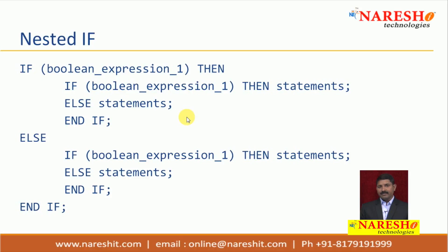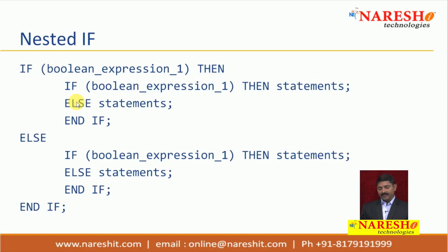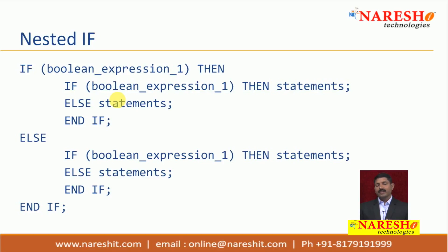In addition to multi-branch IF, you also have nested IF, wherein you can have one IF-ELSE block within a part of another IF-ELSE block. As you can see the syntax on the screen, within the body of one boolean expression you have another set of IF-ELSE — one outer IF-ELSE and one inner IF-ELSE. Multiple levels of nesting are also possible. This is typically used when after making one selection you go for another — for example, selecting prepaid or postpaid, then selecting the type of service available within each.